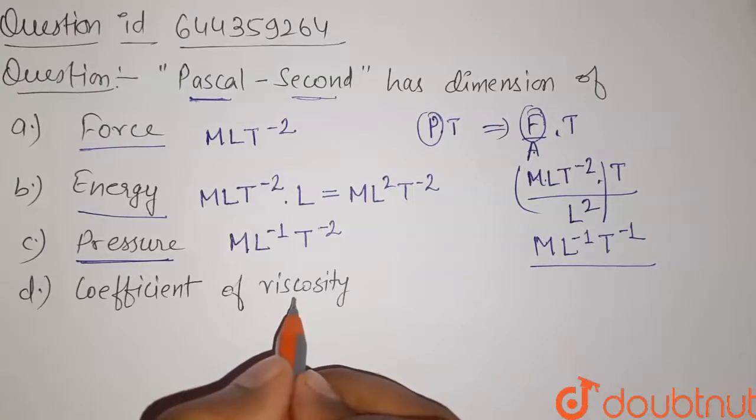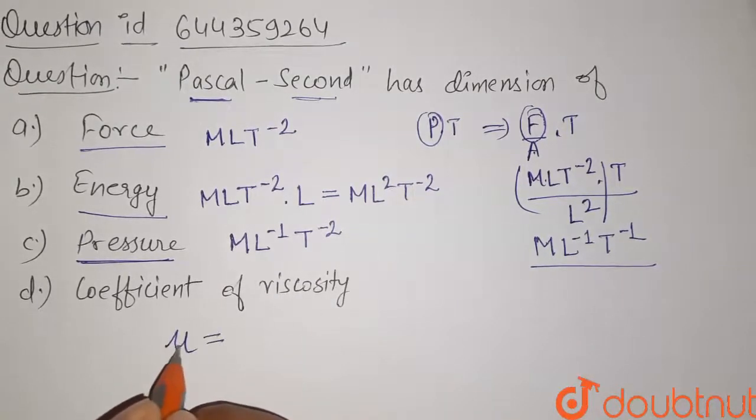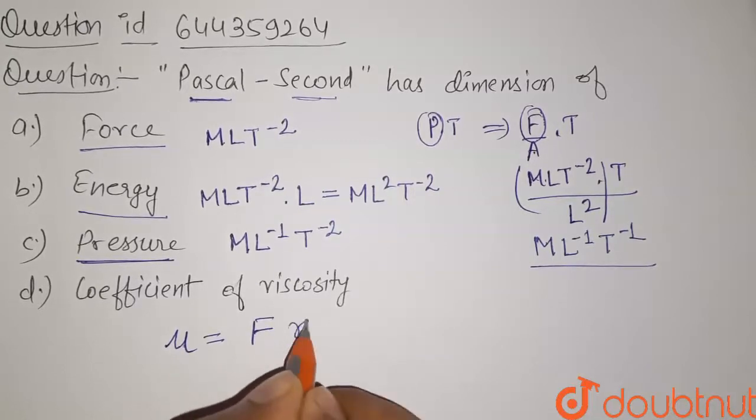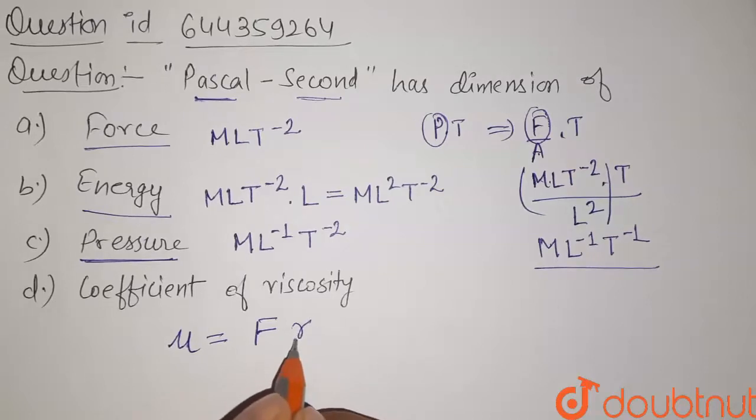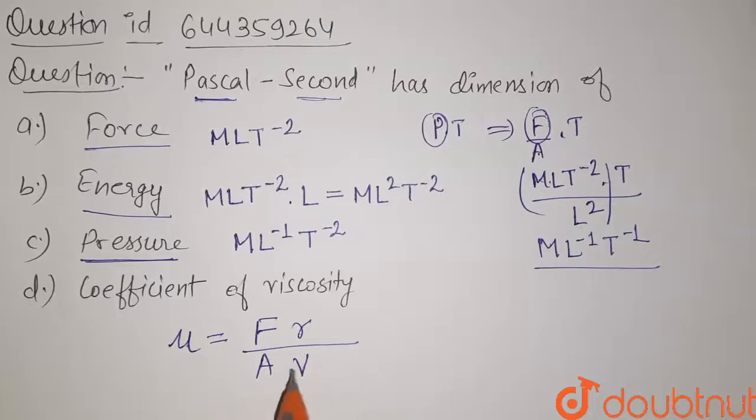Now coefficient of viscosity. So coefficient of viscosity, we have the formula that is mu, the coefficient of viscosity is equals to force into r, that is the distance between layers, divided by area into velocity.